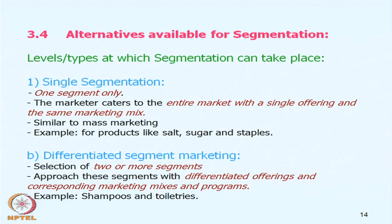Another form is differentiated segment marketing, where the marketer selects two or more segments and offers differentiated product or service offerings with different marketing mixes for each. Taking soaps, shampoos, and other toiletries as an example — companies select two or more segments and offer the same soap under two different brands priced differently. You may have a soap for 32 rupees or one for 12 rupees. Different segments, different products, different brands — this is differentiated segment marketing.